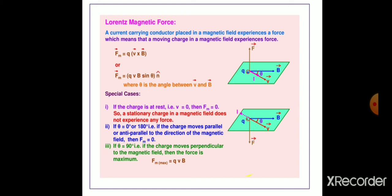Similarly, if θ is equivalent to 0 or 180 degrees, that is, if the charge moves parallel or anti-parallel to the direction of magnetic field, then also Fm is equivalent to 0.